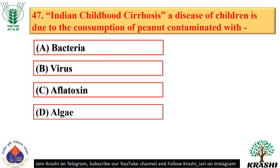Question number 47. Indian childhood cirrhosis is a disease of children due to the consumption of peanuts contaminated with aflatoxin — option C.